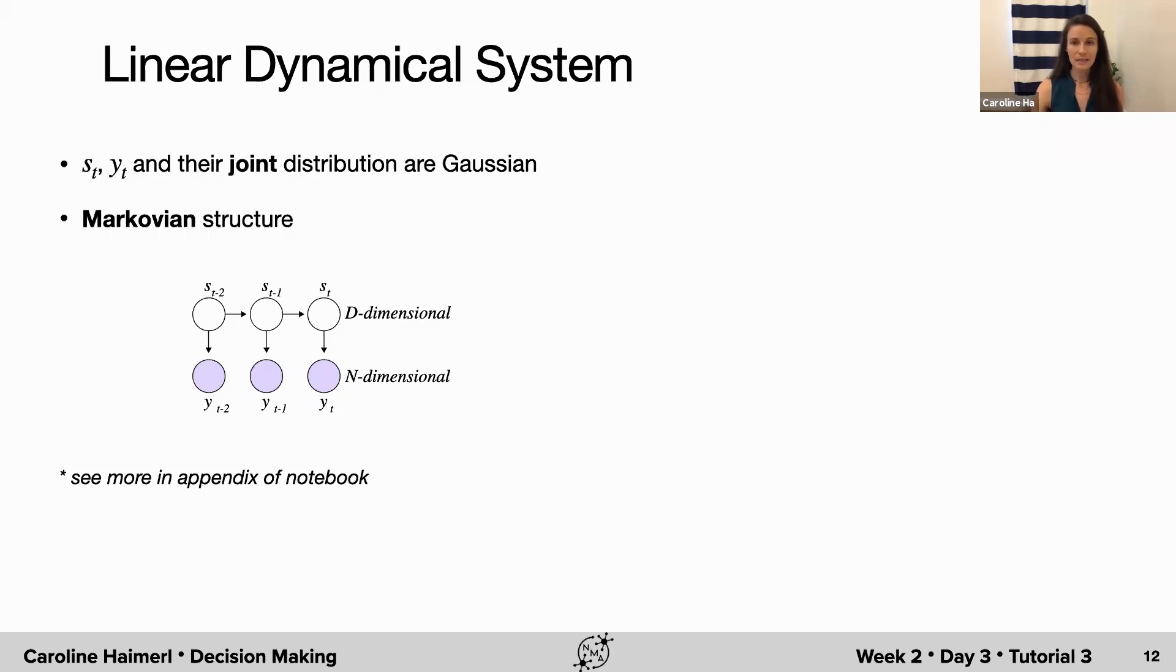And second, just as in the hidden Markov model, we have this Markovian structure where the latent at time point t is conditionally independent of all the previous time points given its direct predecessor. We're not going to go into the mathematical details here, but you can learn more about it in the appendix of the notebook.